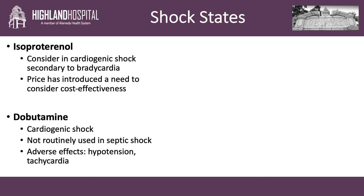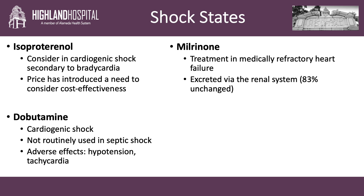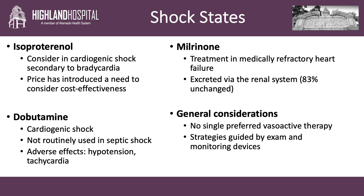How do we use these drugs clinically? The American Heart Association recommends consideration of isoproterenol in patients that have cardiogenic shock secondary to bradycardia; unfortunately, the drug's expense has introduced a need to consider cost-effectiveness. Dobutamine is most frequently used in patients that have severe medically refractory heart failure or cardiogenic shock. This drug should not be used routinely in septic shock because of the risk of hypotension. Adverse effects include hypotension and tachycardia. Milrinone is also used in the treatment of medically refractory heart failure. It's excreted almost exclusively through the renal system and therefore should be used with caution in patients that have chronic kidney disease. Generally, there is not a single preferred vasoactive therapy, and the strategy employed depends upon the etiology of the shock and the patient's clinical presentation. Fluid and vasoactive strategies are often guided by a dynamic bedside exam in addition to invasive monitoring devices that enable optimization of preload, afterload, and pulmonary and systemic vascular resistance.